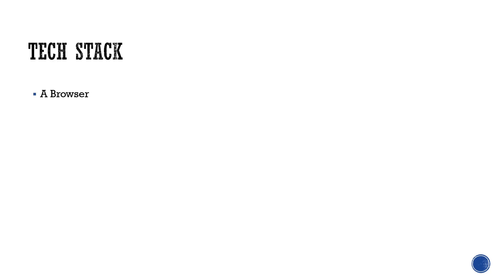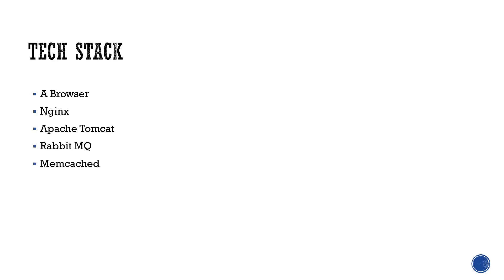The first component would be a browser — this could be any browser: Brave, Firefox, Google Chrome, or Edge. After that, we're going to talk about what nginx is and what function it serves in this project. Then we'll cover Apache Tomcat, RabbitMQ, Memcache, and MySQL. You can install MySQL 5.6 or later — anything would do.